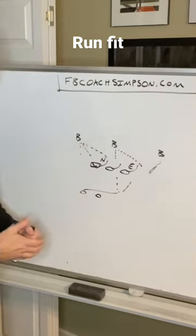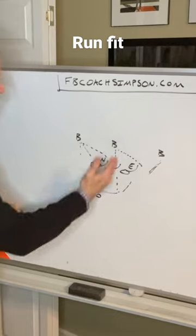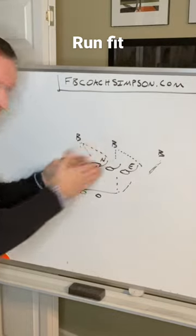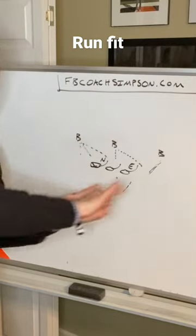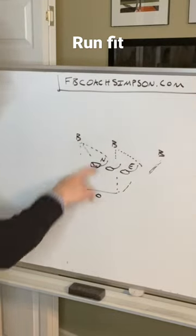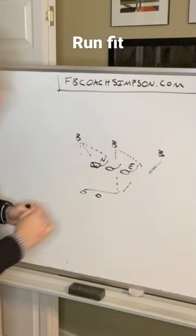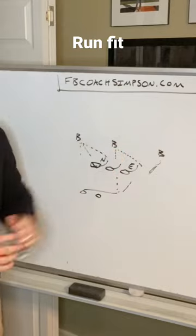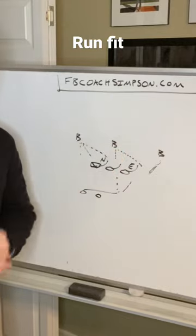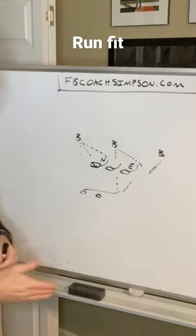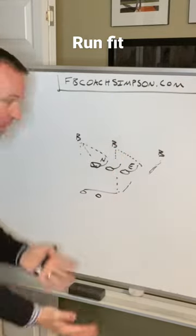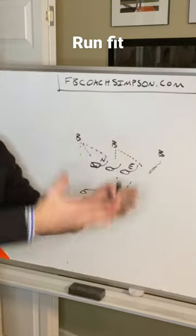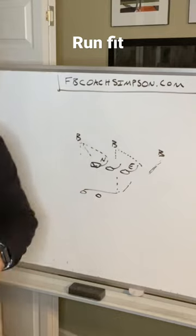The playside linebacker works the same way — the ball comes to him, he fits straight ahead. If the ball flows outside, he's going to fit inside here. And then our outside linebacker's run fit is to turn everything back inside to his buddies.